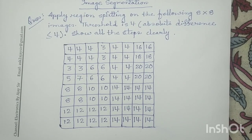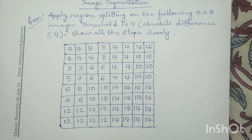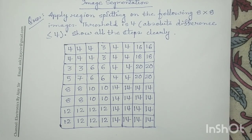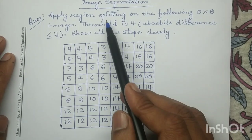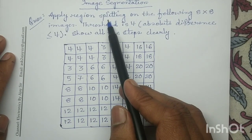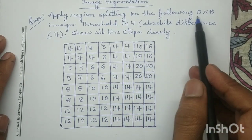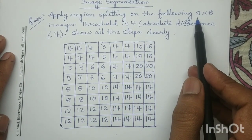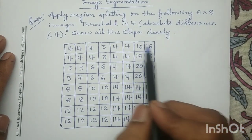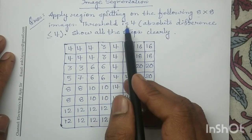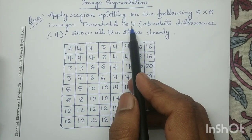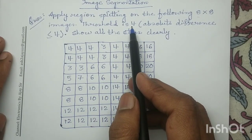Good morning all. Let us discuss one numerical question on region splitting. In this question we have to perform the region splitting operation for this following 8x8 image. The threshold value given to us is 4.